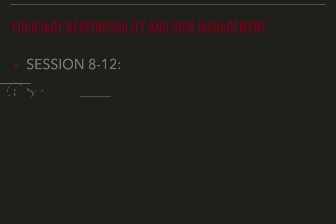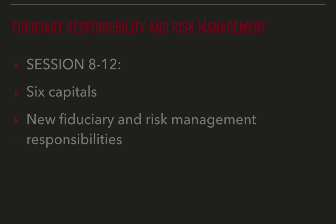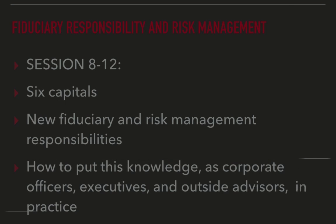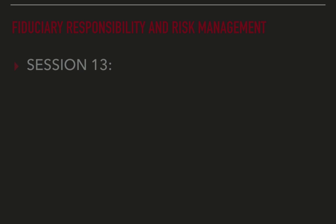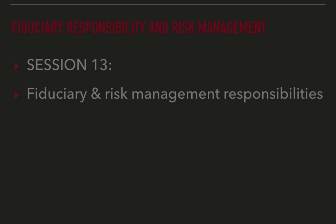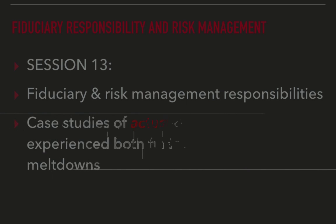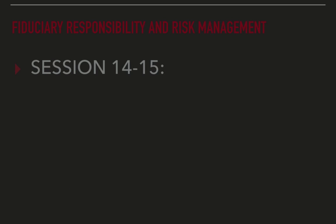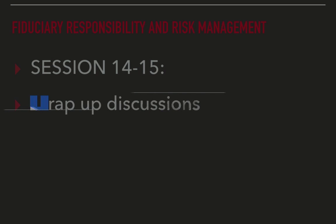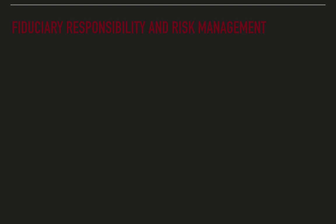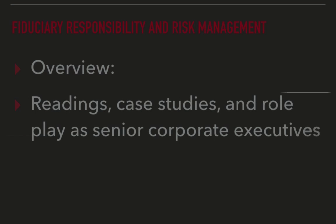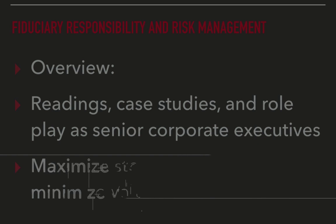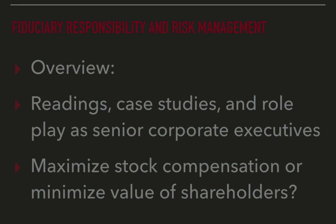In sessions eight through twelve, we'll look at the six capitals from the perspective of your new fiduciary and risk management responsibilities and how to put this knowledge as corporate officers, executives, and outside advisors into practice. In session thirteen, we're going to look at fiduciary and risk management responsibilities, applying them to case studies of actual corporations that have experienced both financial and non-financial meltdowns, and how they could have been prevented. In sessions fourteen and fifteen, we're going to wrap up our discussions. Throughout this, we're going to have readings, case studies, and some role-playing — pretending that some of us are senior corporate executives and determining whether we want to maximize stock compensation or minimize shareholder value, or whether we really care.